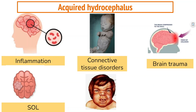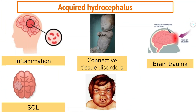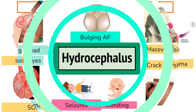Acquired hydrocephalus develops after birth and is caused by inflammation, trauma, tumours, and space-occupying lesions like tuberculoma, subdural hematoma, or abscess, glioma, ependymoma, astrocytoma, choroid plexus papilloma, or pseudotumor cerebri. In cases of connective tissue disorders such as Hurler syndrome and achondroplasia, hydrocephalus may also occur.